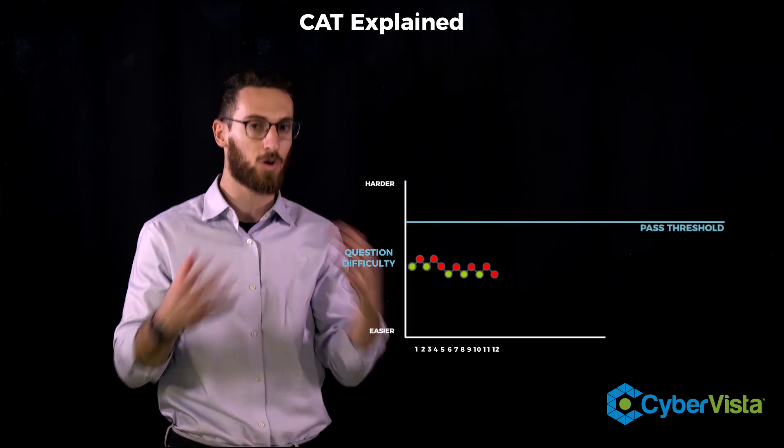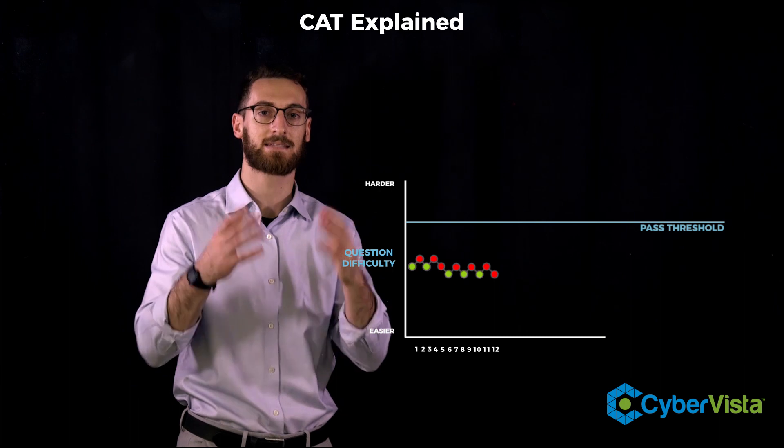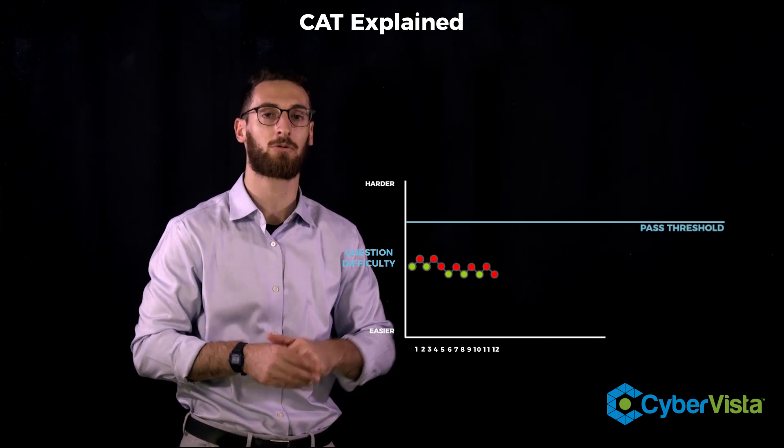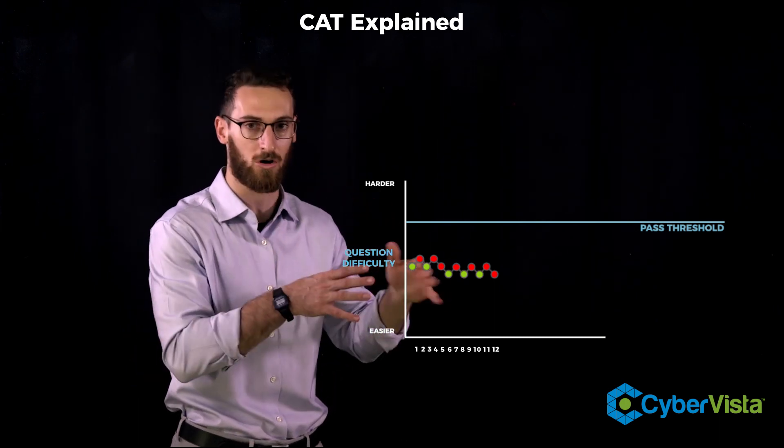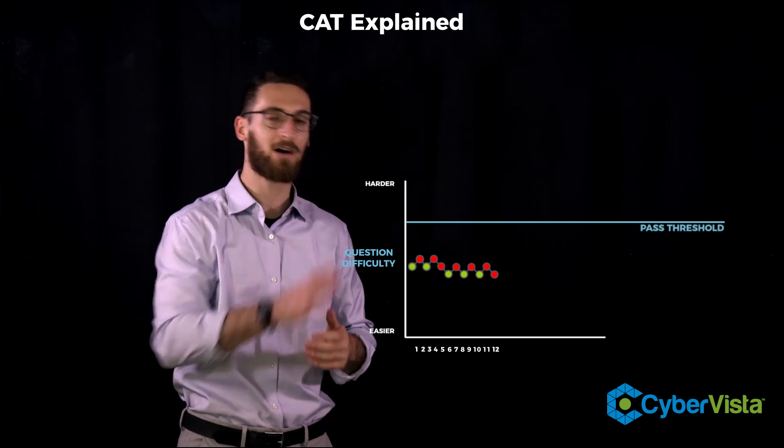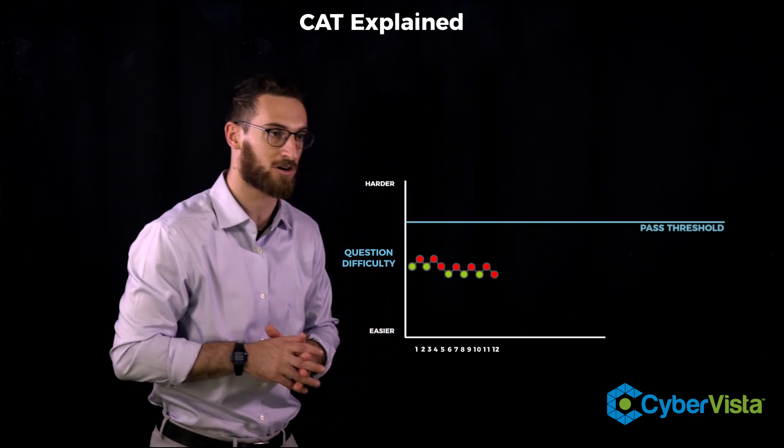Why? Because the goal or the point of any adaptive test is to get test takers at a point where they get every other question wrong. Now, while all this is happening, there's one other thing we have to talk about, which is the confidence interval.